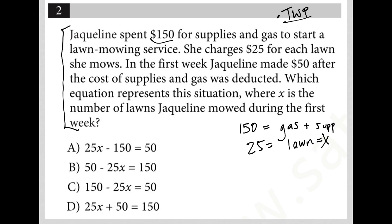In the first week, Jacqueline made $50 after the cost of supplies and gas was deducted. That means she made $200 in total, because after she took out the $150, she had $50 left. So the equation is 25X minus $150 equals $50 — she cut some lawns at $25 each, subtracted her $150 startup costs, and had $50 left as profit.